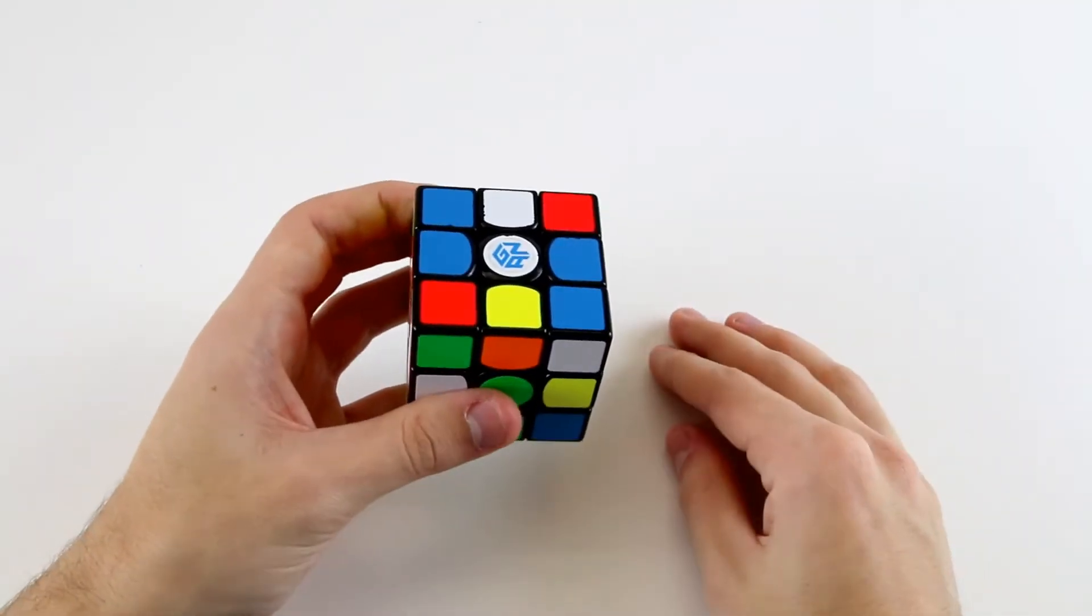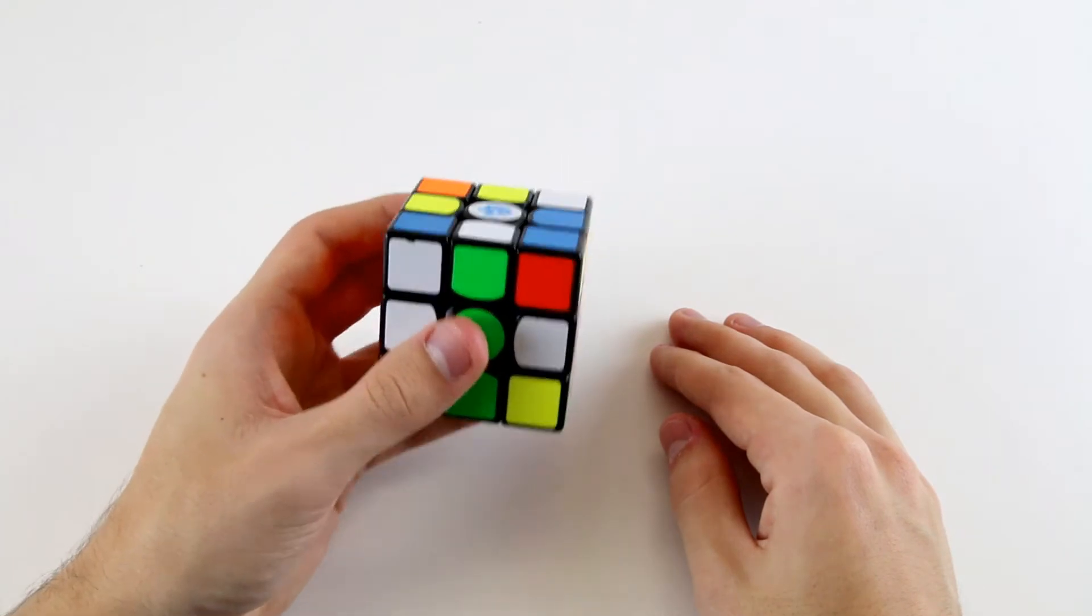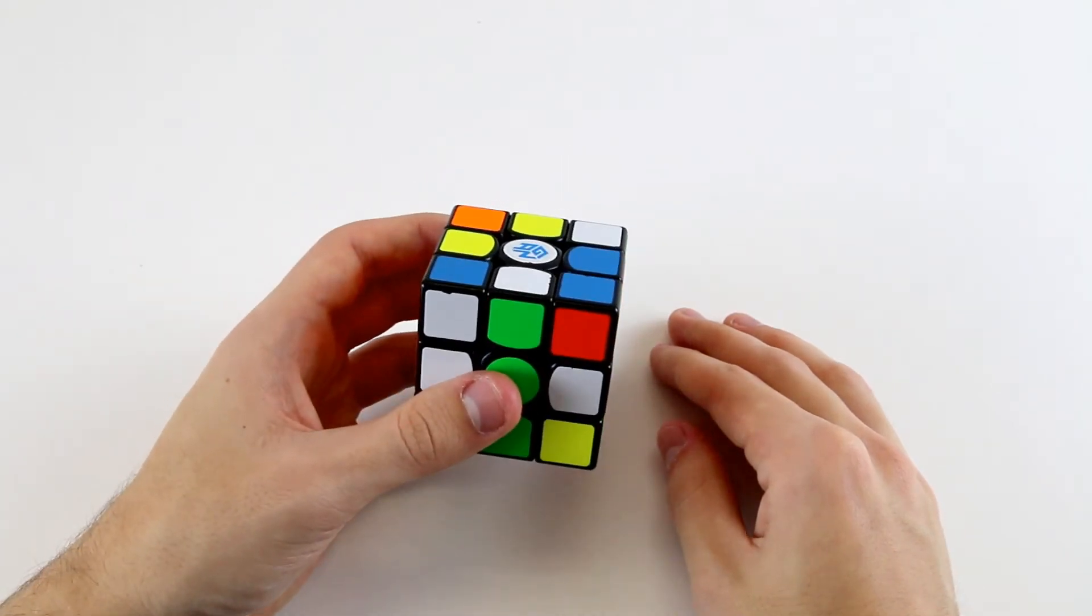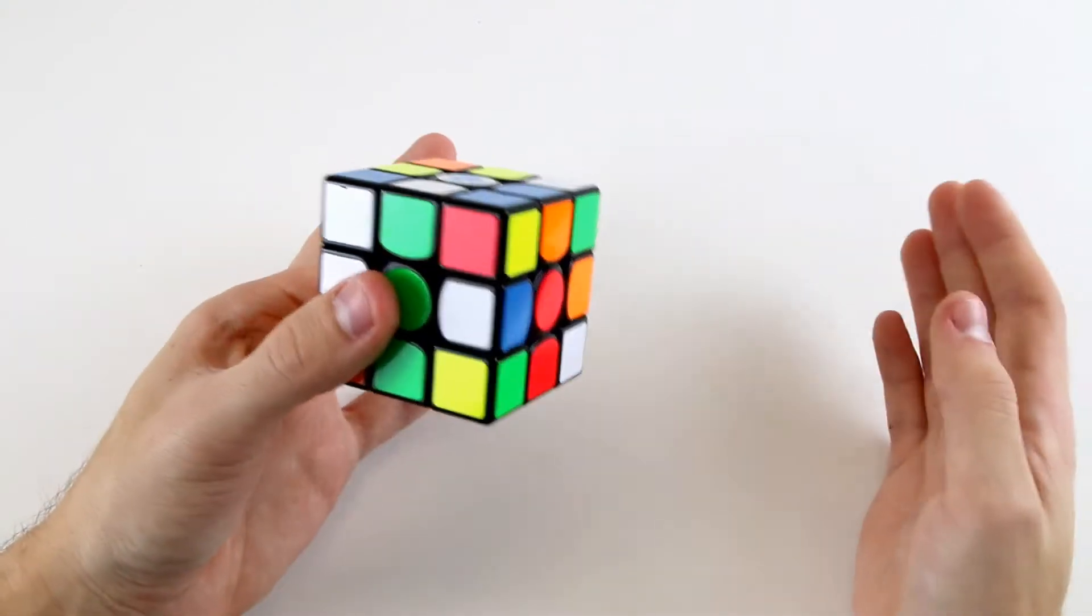However, because we're restricting ourselves to a slightly smaller move set compared to two-handed solving, there tends to be a slight increase in our move count. But we can view this as intentional because it will benefit our turning speed by a greater proportion.